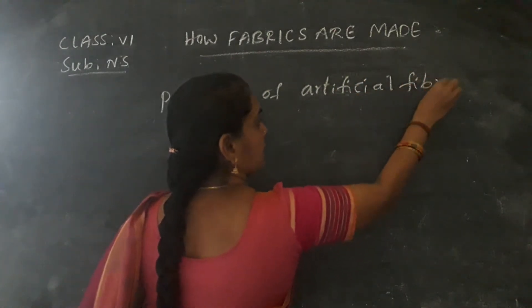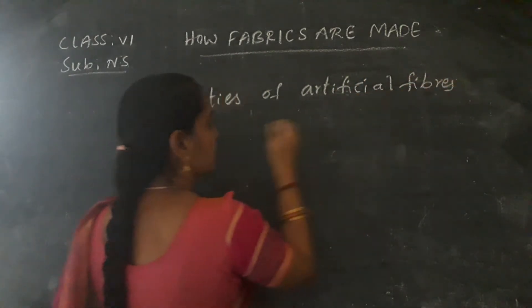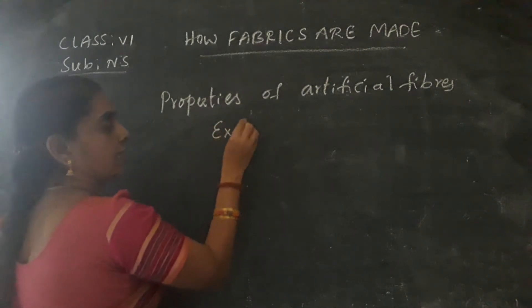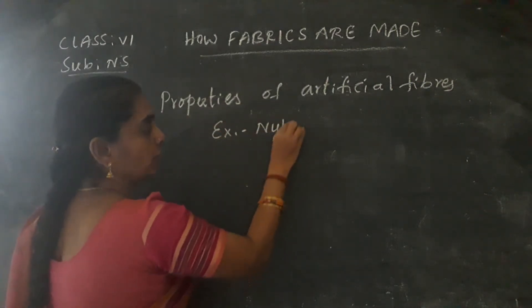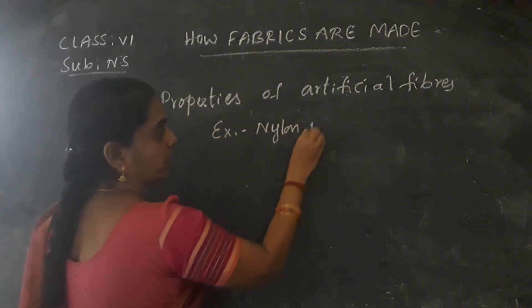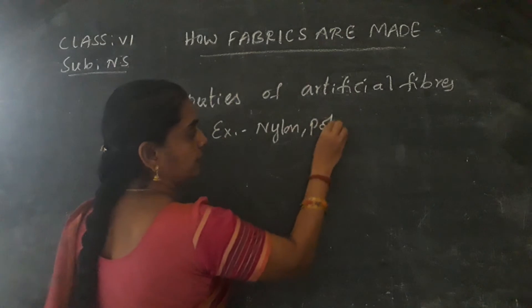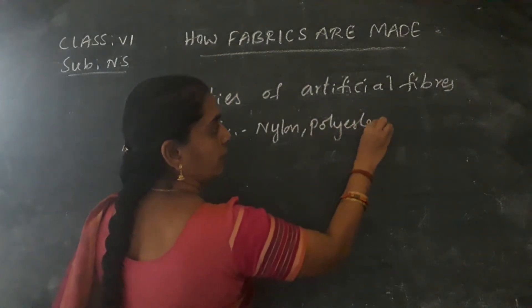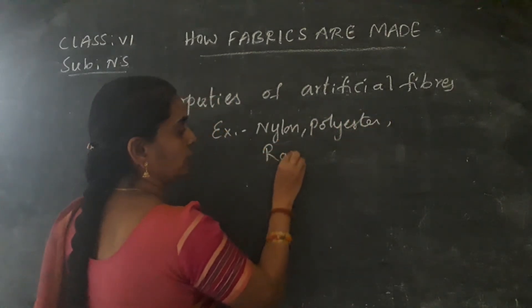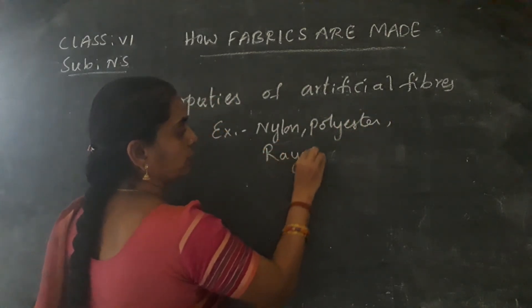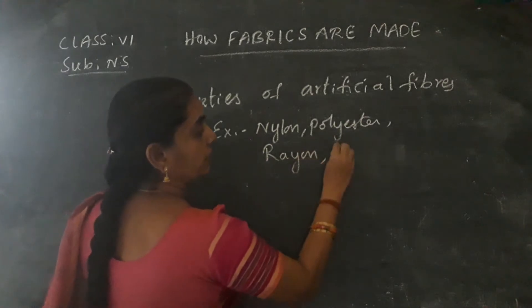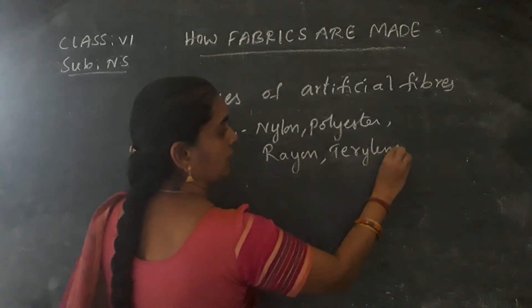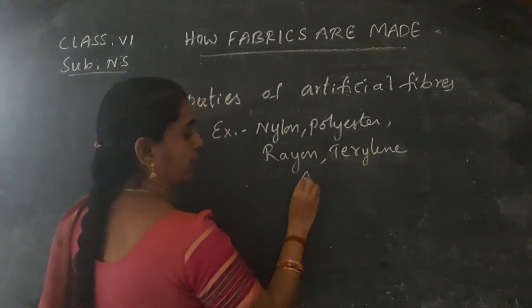Examples of artificial fibers, as you know well, are nylon, polyester, rayon, terrylene, and acrylic.